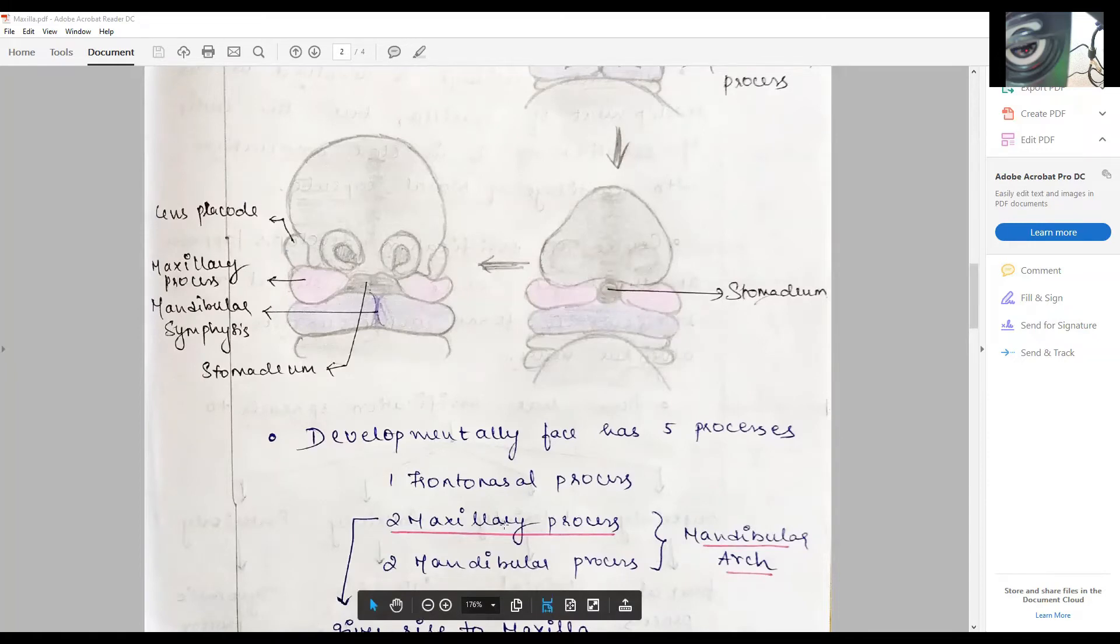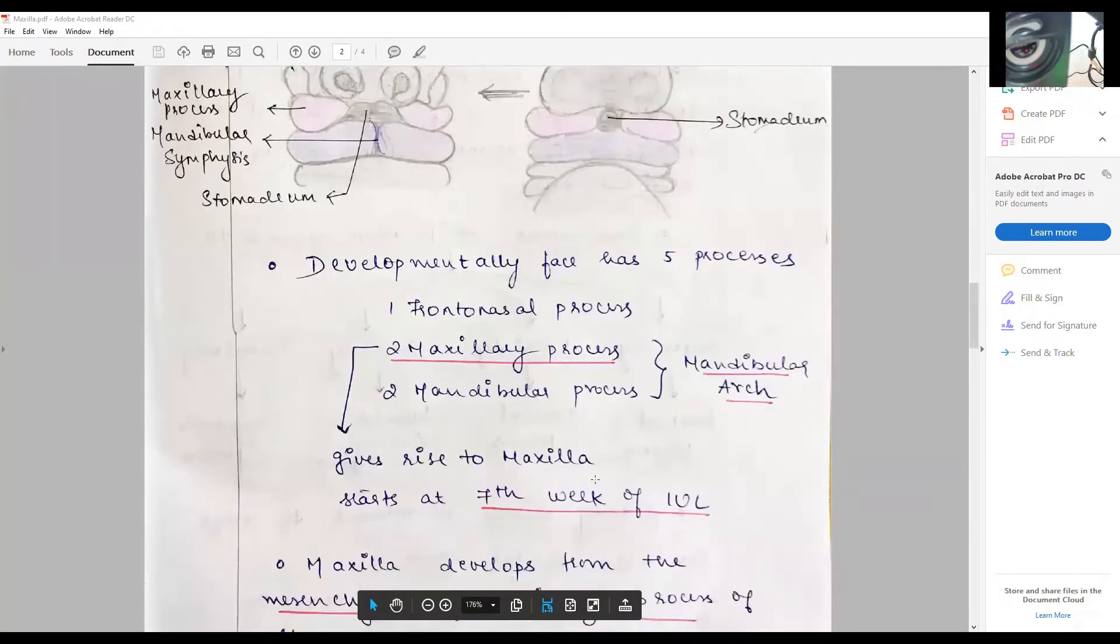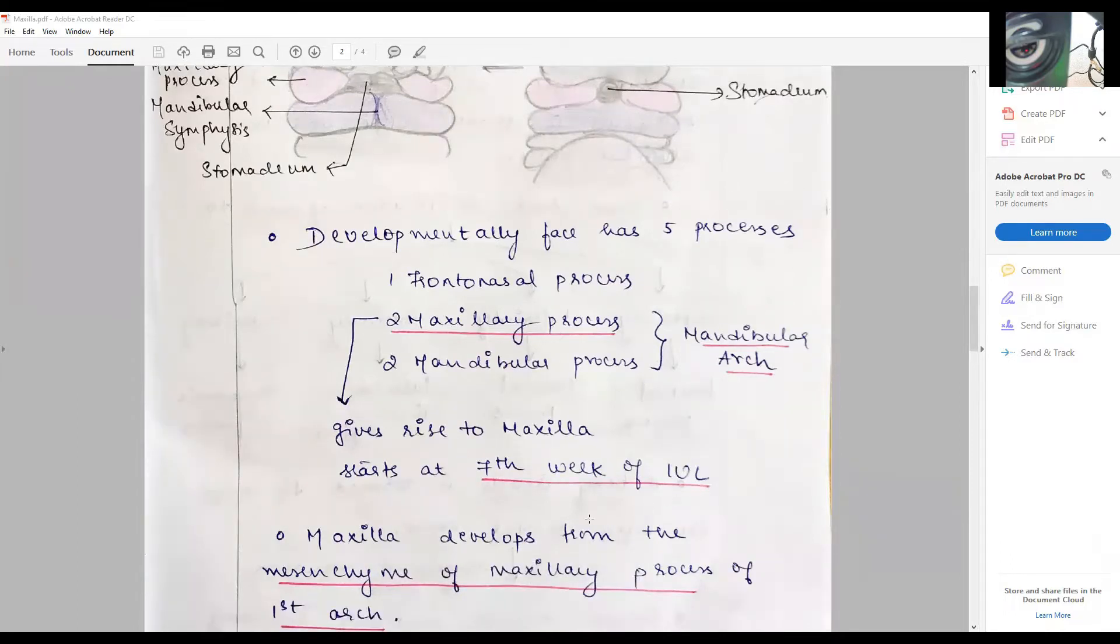The maxillary process by itself arises from the mandibular process, and together this is called the mandibular arch, of which this maxillary process gives rise to the maxilla, which starts about the seventh week of intrauterine life. It develops from the mesenchymal maxillary process of the first arch.